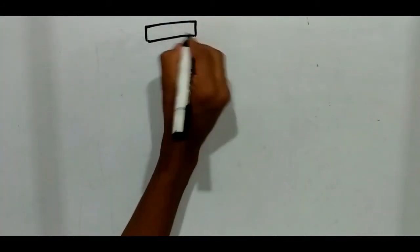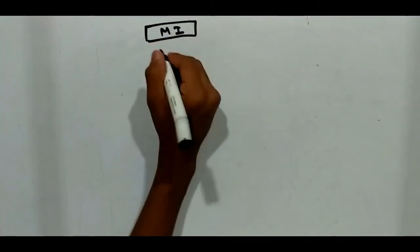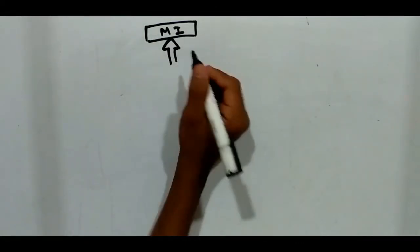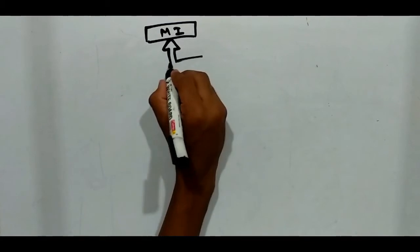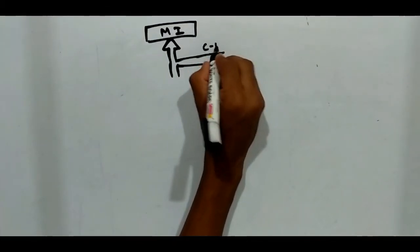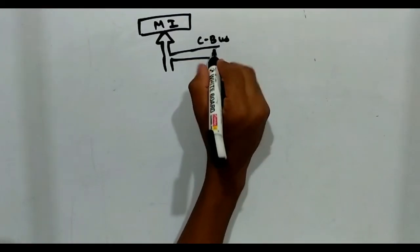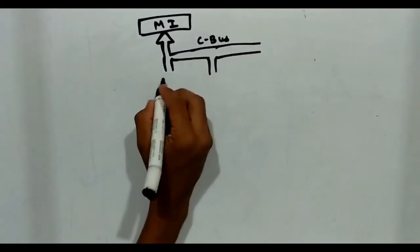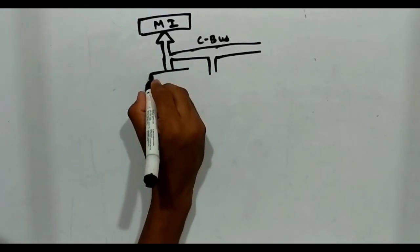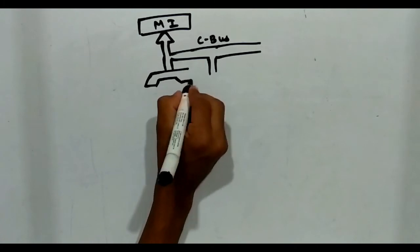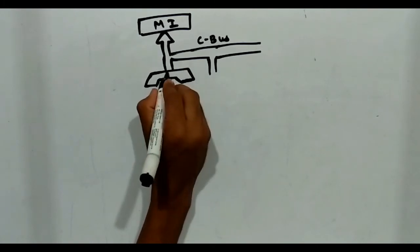So now we are going to draw the memory interface. This is memory interface. This is the C bus. Here is the Sigma.